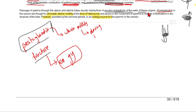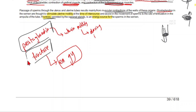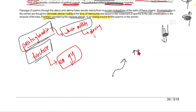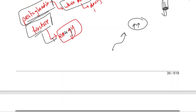Fructose is present in the seminal gland. Prostaglandins increase uterine motility when sperm enter the uterus, and fructose provides energy to the sperm.